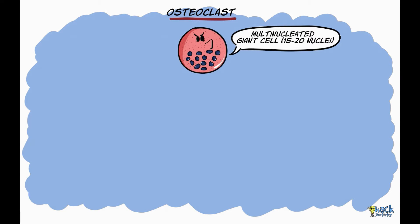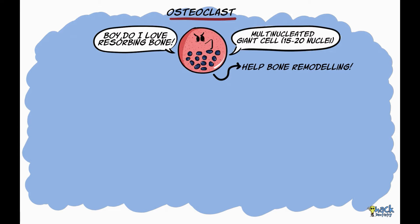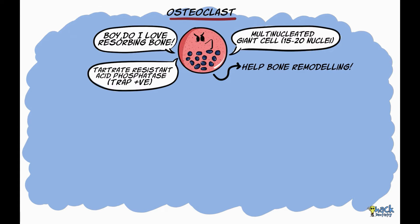Osteoclasts are large multinucleated giant cells having around 15 to 20 nuclei whose function is to resorb bone. They play a very important role in bone remodeling and are characterized by the presence of an enzyme called tartaric resistant acid phosphatase.